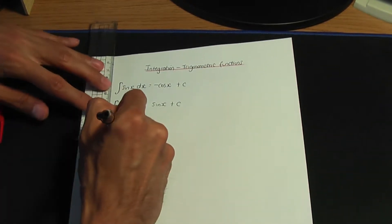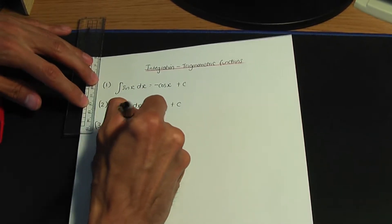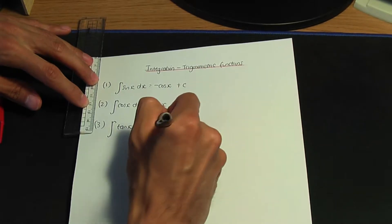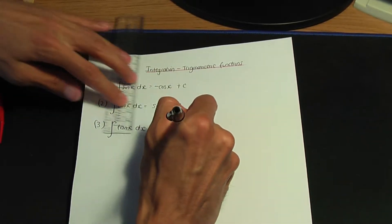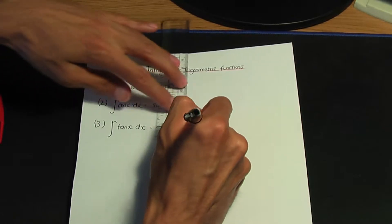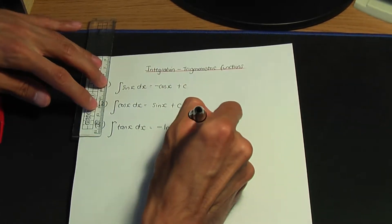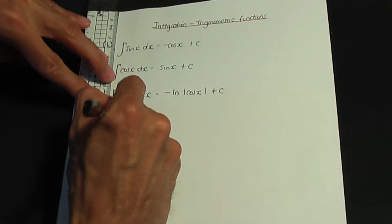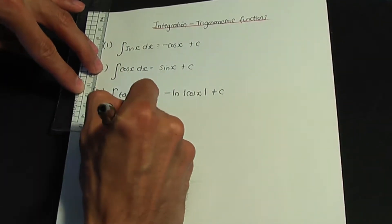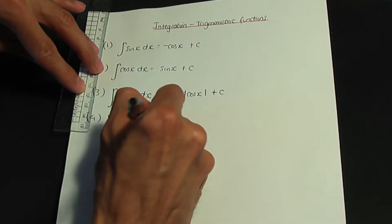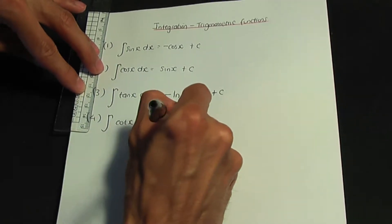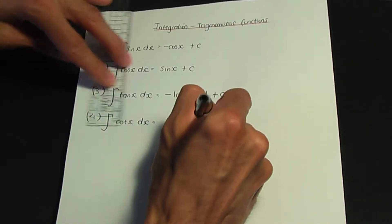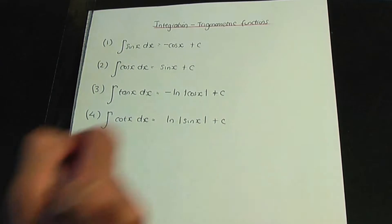Number three: if you integrate tan x with respect to x, the integration of tan is minus ln of the modulus of cos x, plus c. Number four: whenever you integrate cot x with respect to x, the result is ln of the modulus of sin x, plus c.